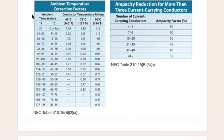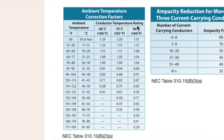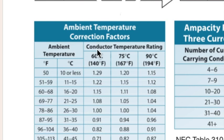So the next thing we need to talk about is our ambient temperature correction factors chart here. In the code book, this is NEC table 310.15(B)(2)(A). So anyway, we have our ambient temperature, Fahrenheit and Celsius. And then we have conductor temperature rating.